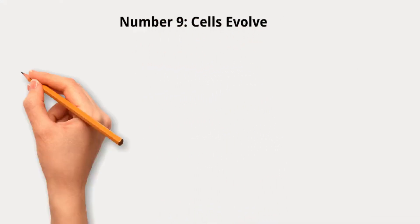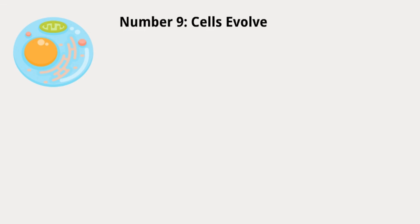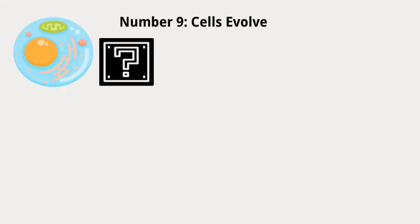Number 9: Cells evolve. Cells have been around for a very long time, but how they first came into existence is a mystery. It's believed they evolved from some primitive form of life, which in turn emerged from organic materials in the ancient oceans. While we may never know exactly how cells first appeared, we can study how cells have changed and evolved over time by looking at organisms today.